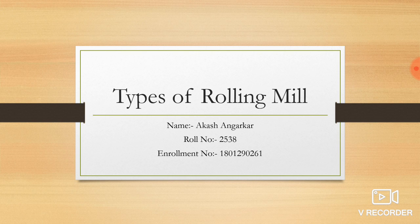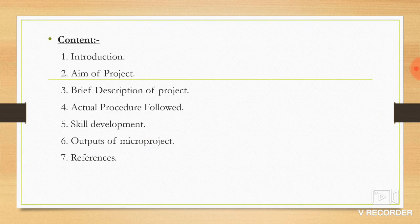Hello friends, we have the topic of types of rolling mill. First, introduction. Second, name of micro project. Third, description of project. Fourth, actual procedure followed. Fifth, skill development. Sixth, output of micro project. Seventh, reference.